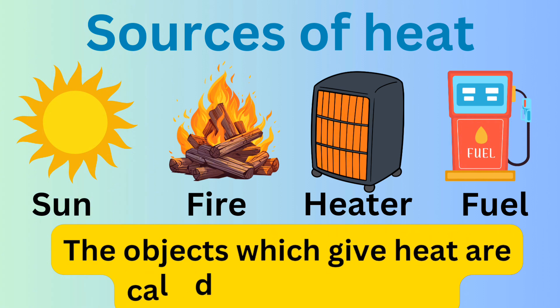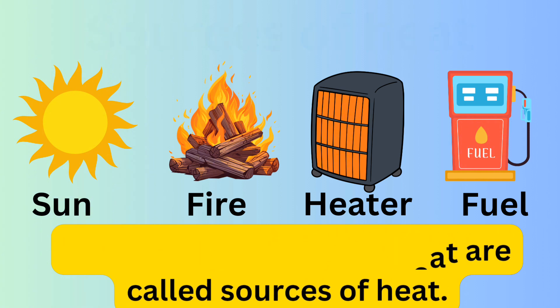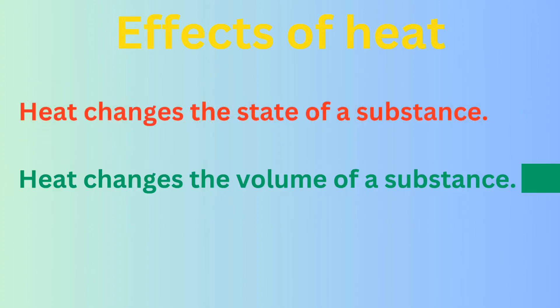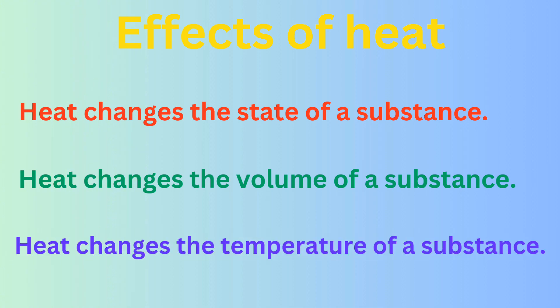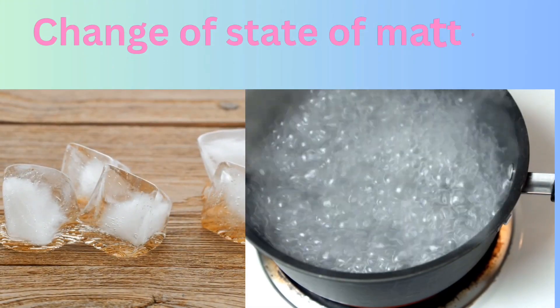The objects which give heat are called sources of heat. There are many effects of heat. Some of them are: heat changes the state of a substance, heat changes the volume of a substance, and heat changes the temperature of a substance.